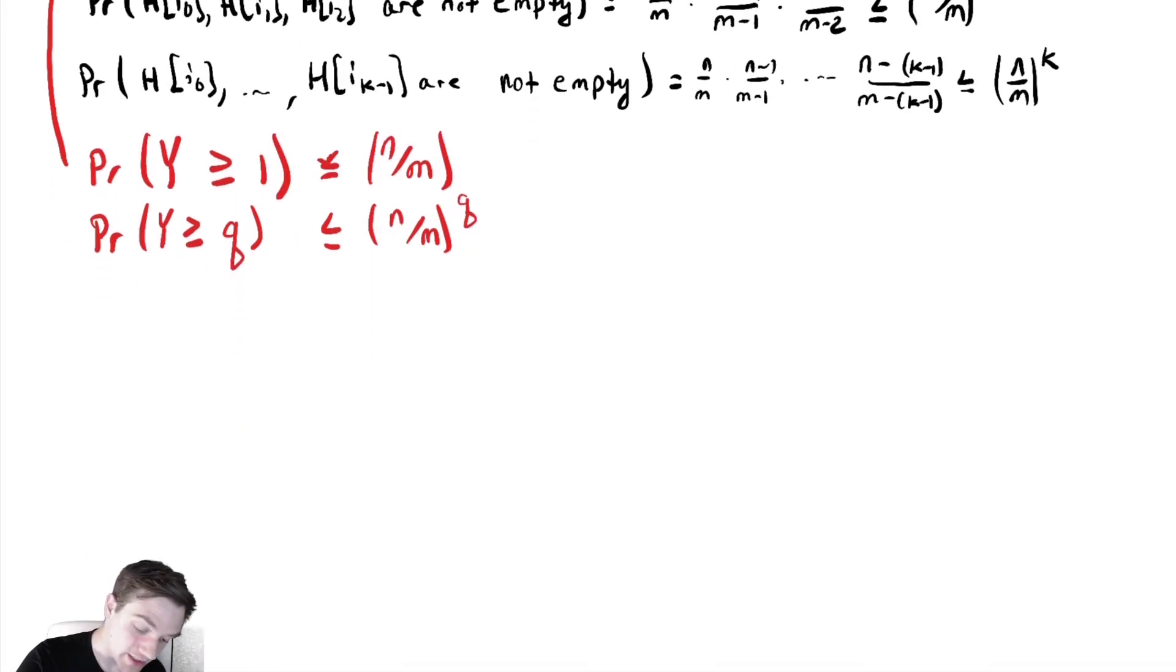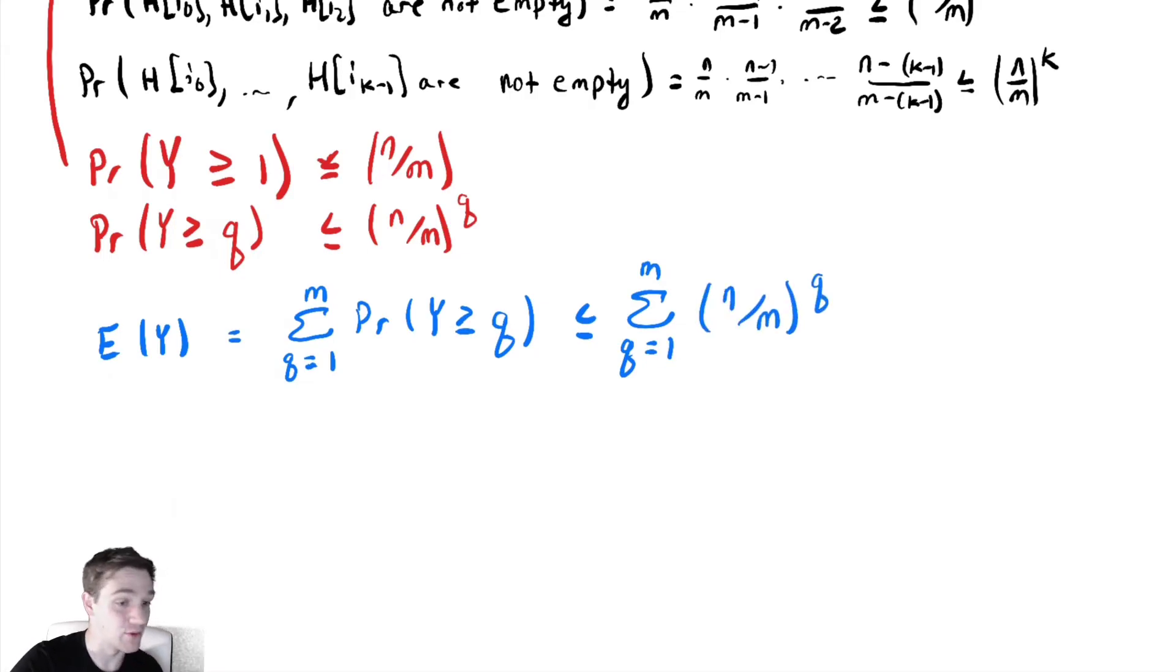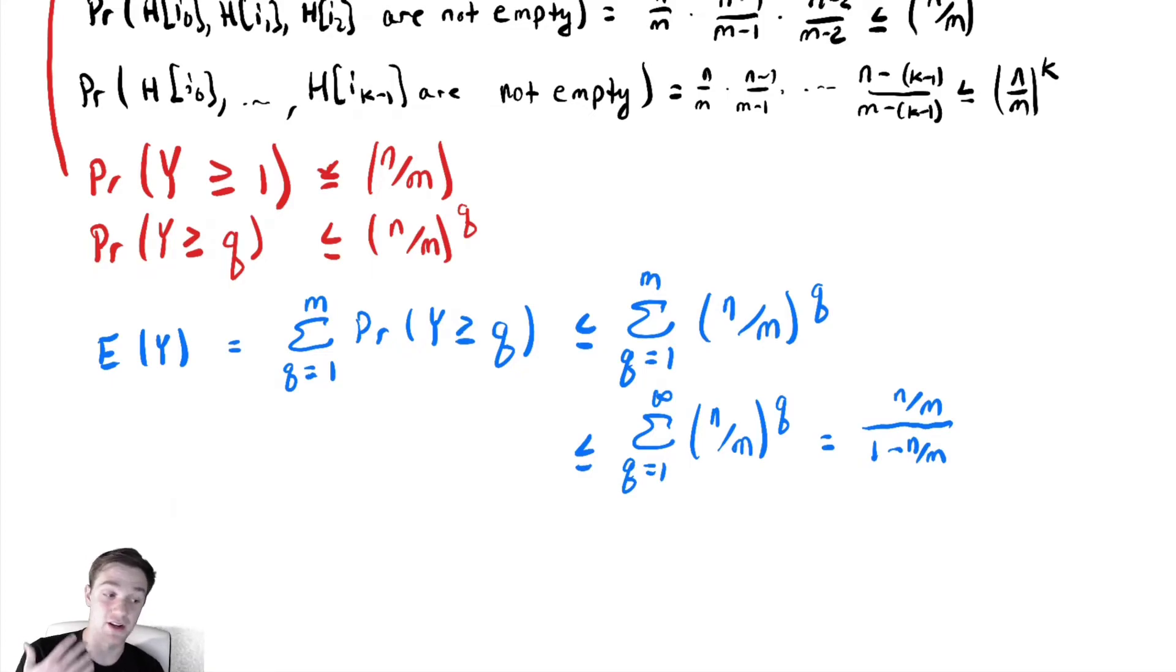Now for the expected value of Y, it equals the sum from q=1 to m of Pr(Y ≥ q). Why only to m? The loop only goes as high as m, that's the most times it could execute. This is less than or equal to the sum from q=1 to m of (n/m)^q using our bound. We'll further expand to the sum from q=1 to infinity.